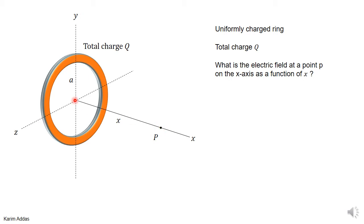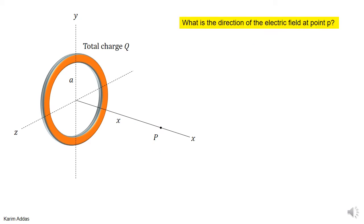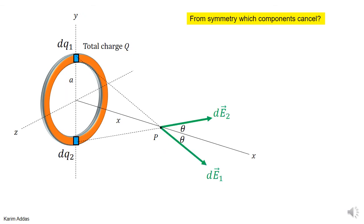That means if we go to different points on the x-axis, what is the electric field as a function of the distance x from the origin? The first thing we can do is figure out the direction of the total electric field at point p. What direction would it point? We can determine this from symmetry.